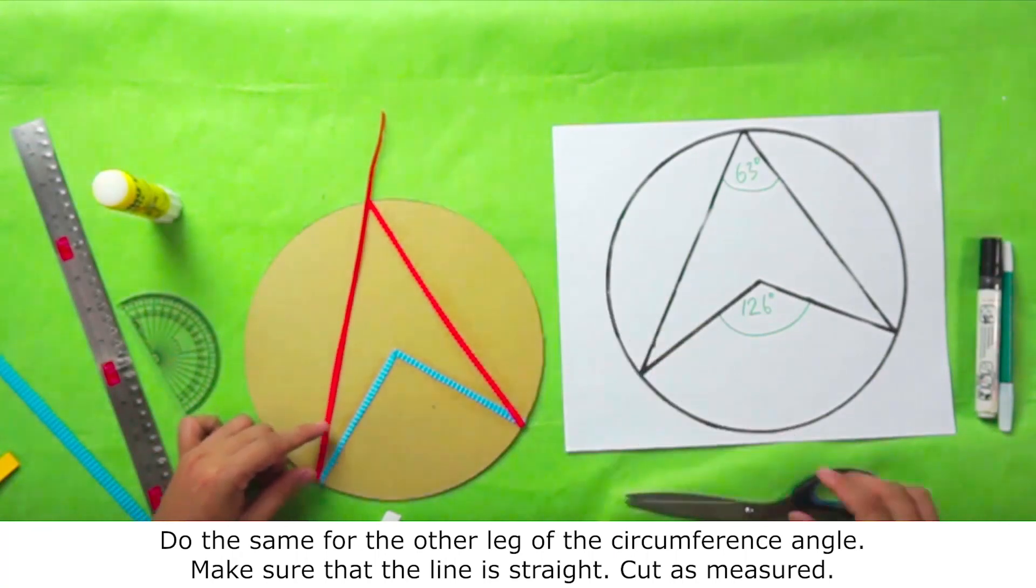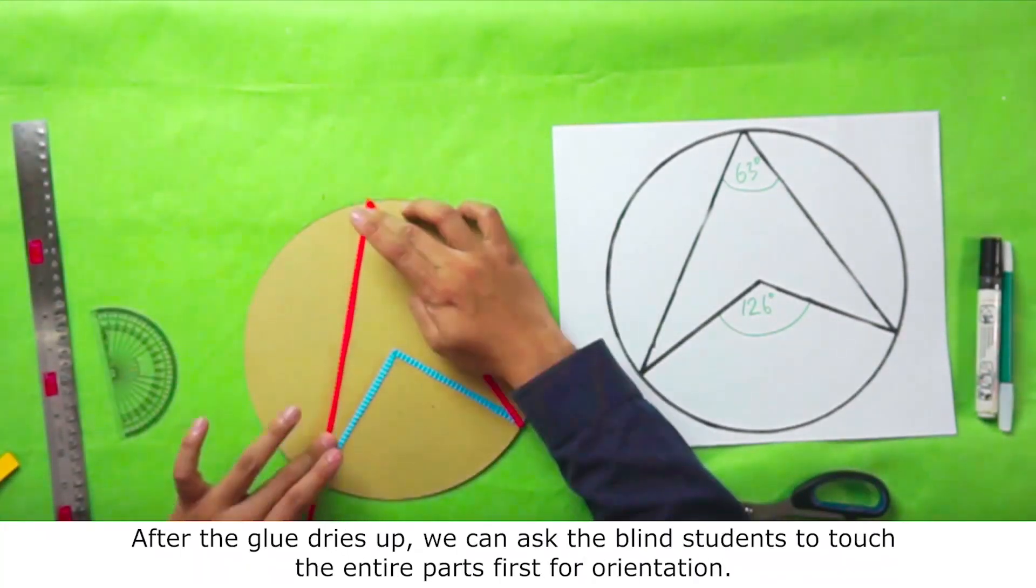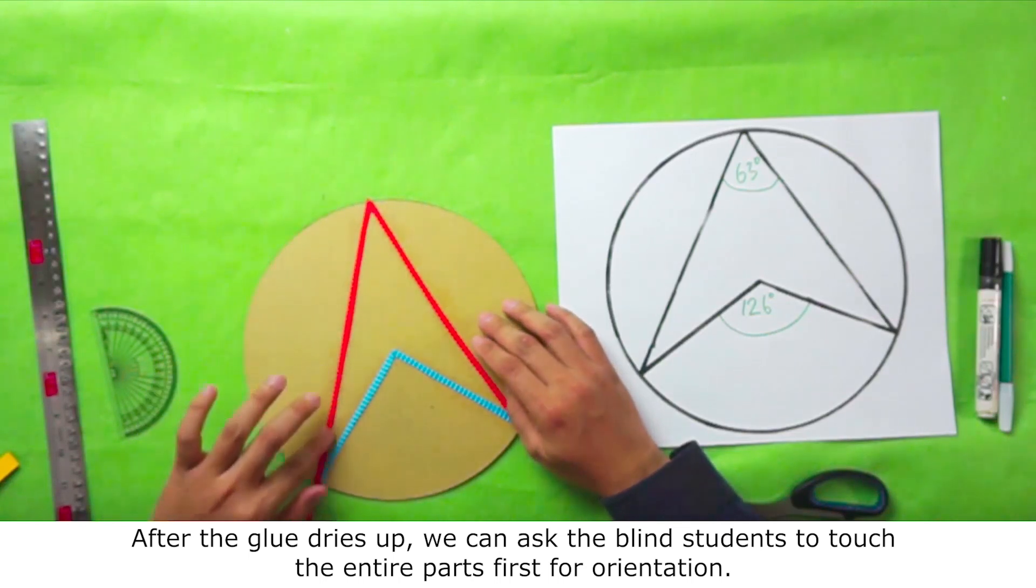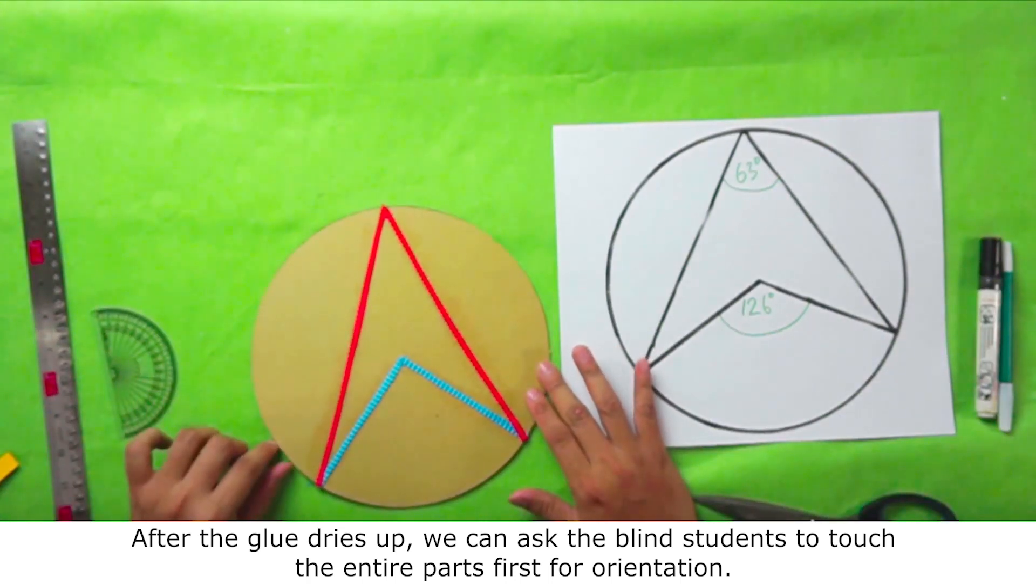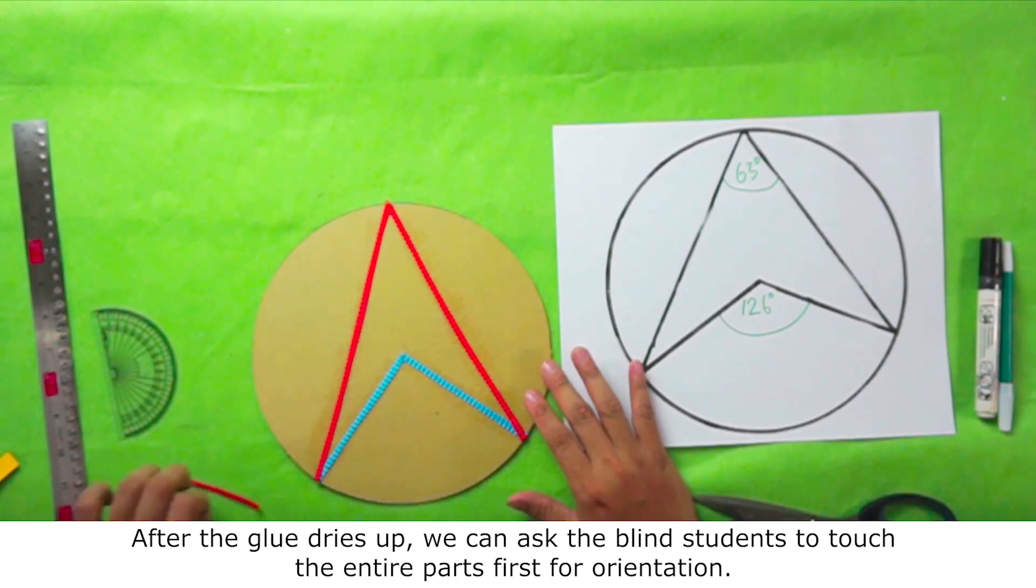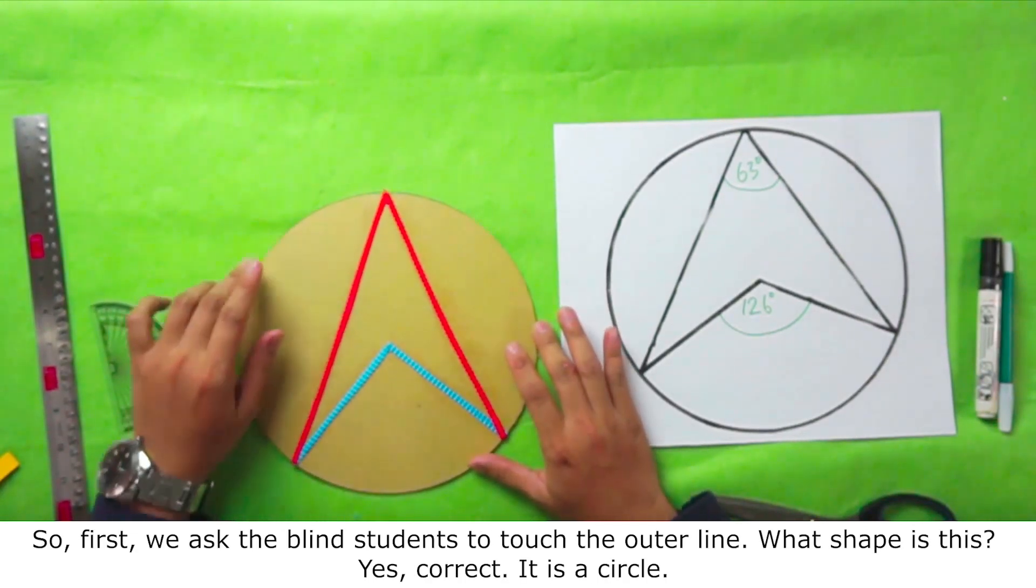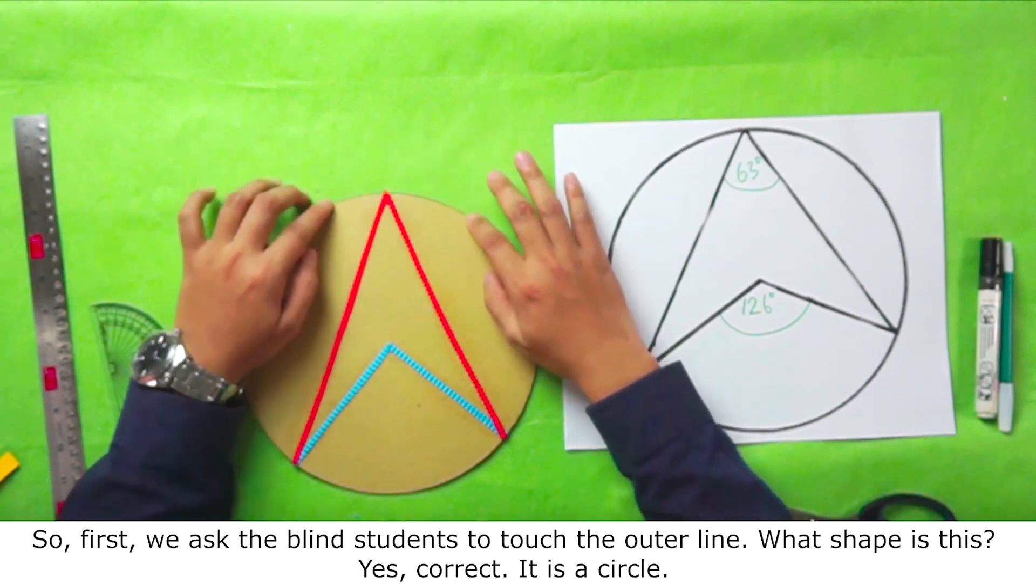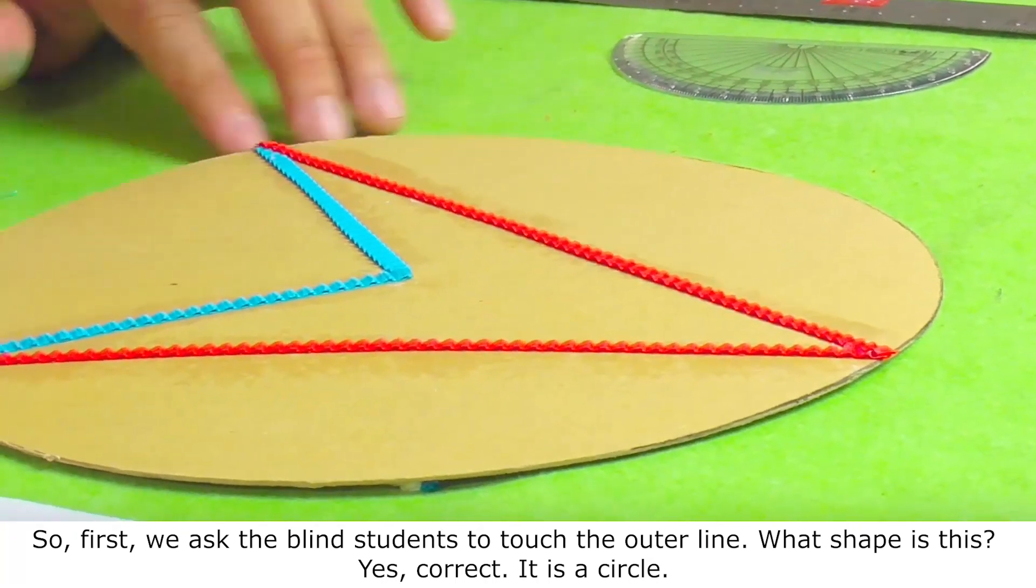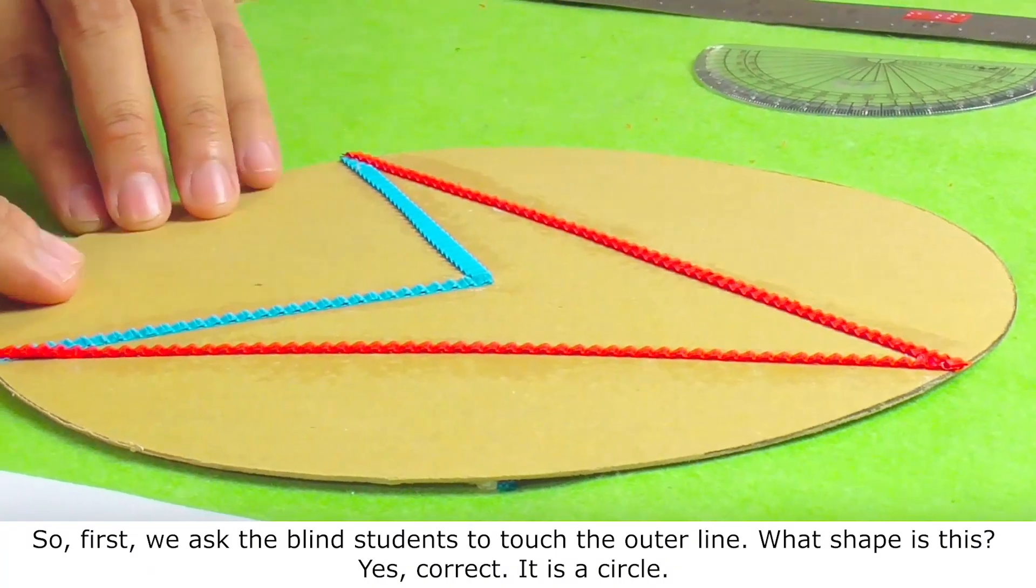After the glue dries up, we can ask the blind student to touch the entire part first for orientation. So first, we ask the blind student to touch the outer line. What shape is this? Yes, correct. It is a circle.